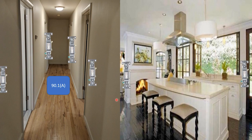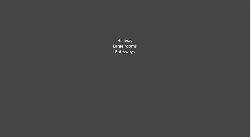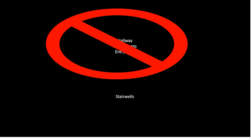There is one place in the code, though, where it does specifically require three-way switching, and it might surprise you. Of all the places that the NEC could require three-way switching configurations — hallways, large rooms, entryways — unfortunately, it's not any of these. The only code-required place in the NEC where you have to have a three-way switching configuration is going to be in stairwells.